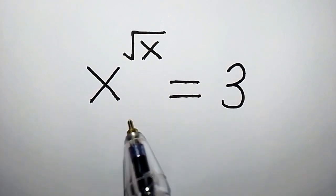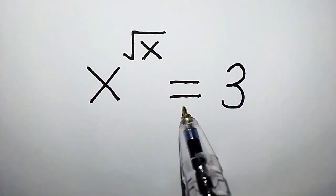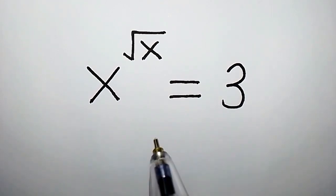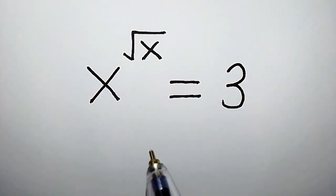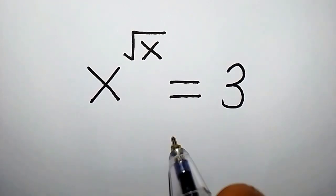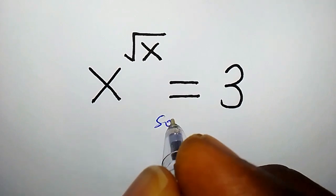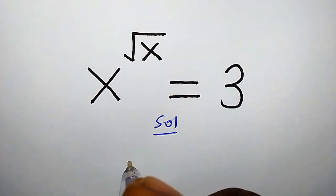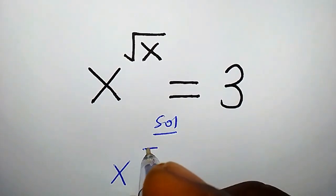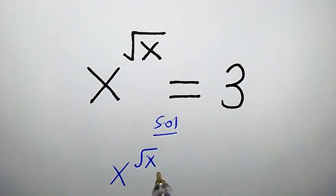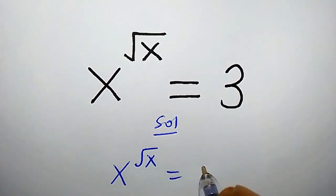x to the power of square root of x equals 3. How do we find the value of x? We have x to the power of square root of x equals 3.